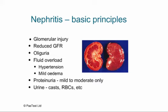Patients get proteinuria because of injury to the glomerulus, but this is mild to moderate, not heavy, and subsequently the edema is only mild. In nephritis the urine is very active — full of white cells, red cells, and casts. Keeping these features in mind will allow us to contrast them starkly to the findings in nephrosis as we move through the lecture.